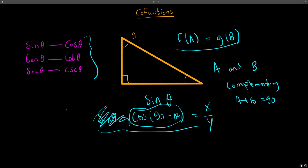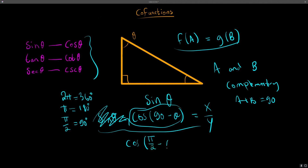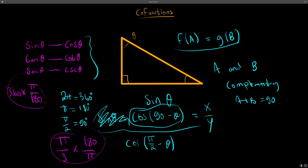They could also give it to us in radians. Remember: 2π equals 360 degrees, π equals 180 degrees, and π over 2 equals 90 degrees. So instead of writing cosine(90 minus theta), they might write cosine(π/2 minus theta). To convert radians to degrees, multiply by 180 over π. To convert degrees to radians, multiply by π over 180.